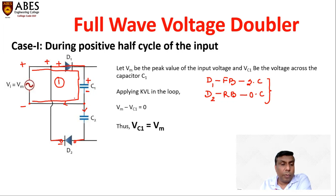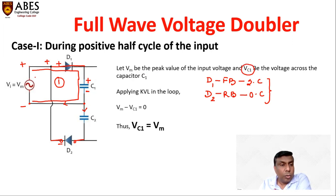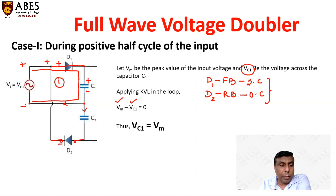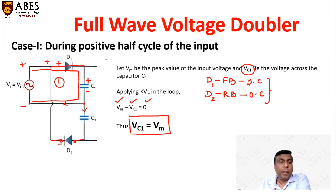We apply KVL in loop number 1. The voltage across capacitor C1 is assumed to be VC1. Applying KVL: +Vm − VC1 = 0, which gives VC1 = Vm. So the voltage across capacitor C1 is Vm during the positive half cycle.